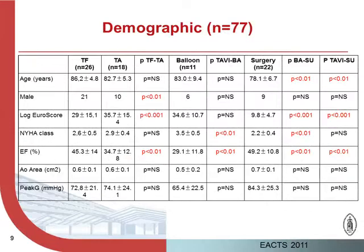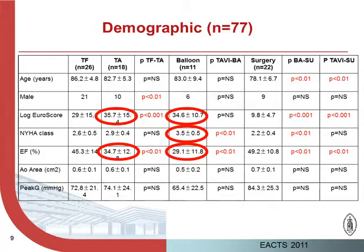This is our demographics. The first group is the transfemoral group. The second group is the transapical group, and as you can see, the transapical patients are sicker than the femoral patients. The balloon group is the sickest patient population in the study, with a very high rate of NYHA classification and a lower ejection fraction.